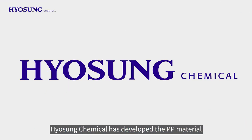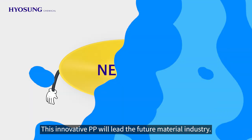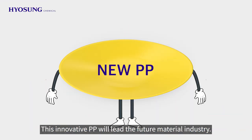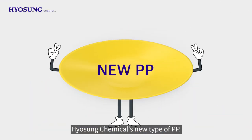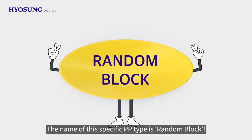Hyosung Chemical has developed a PP material that will solve this problem. This innovative PP will lead the future material industry. Hyosung Chemical's new type of PP is called Random Block.